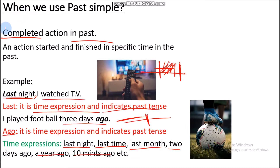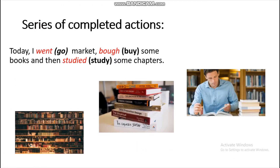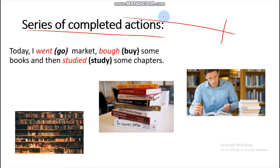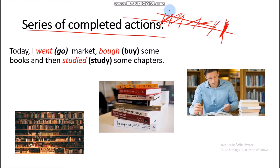دوبارہ — completed action in past میں past simple کا use کرتے ہیں۔ Series of completed actions — یعنی آپ کے بیتے پل کے اندر آپ کہیں گئے، ایک particular time میں گئے، پھر وہیں سے چلے گئے، کچھ خریدے، پھر اس کے بعد کچھ اور کام کیا — for example: today I went to market, I bought some books and then studied some chapters.